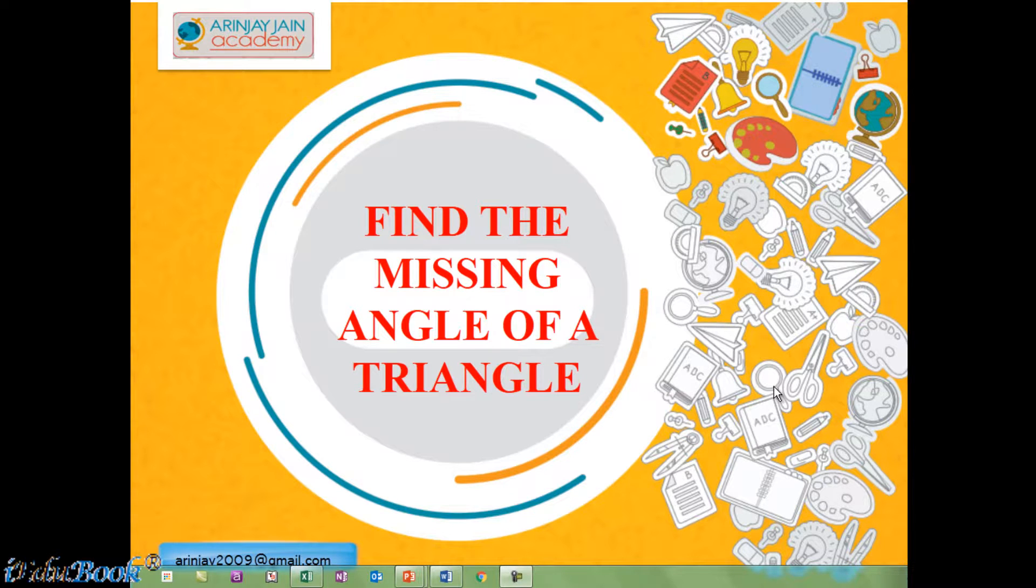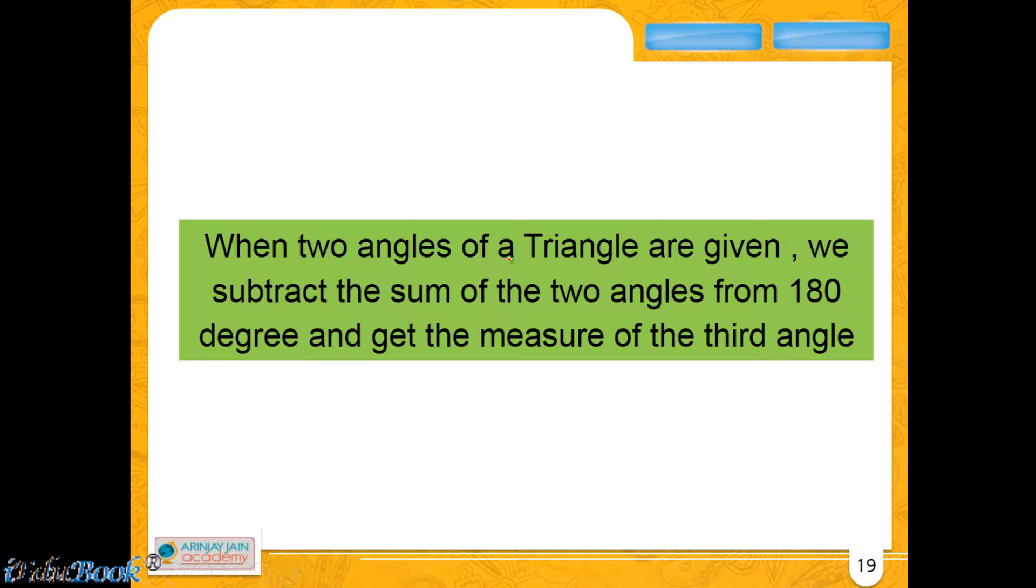Let us now look at how to find the missing angle of a triangle. When two angles of a triangle are given, we subtract the sum of these two angles from 180 degrees and get the measure of the third angle.